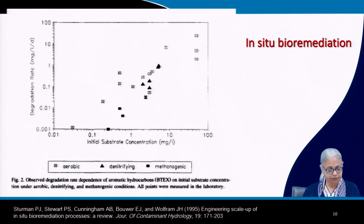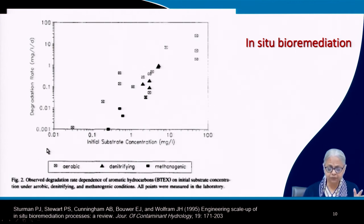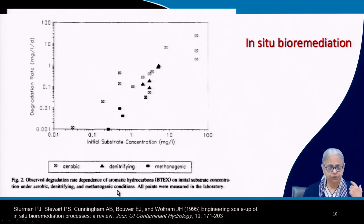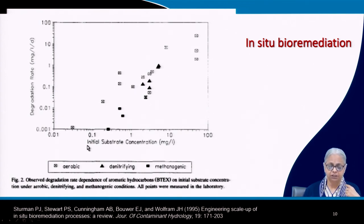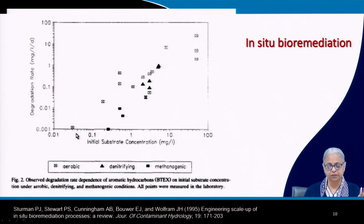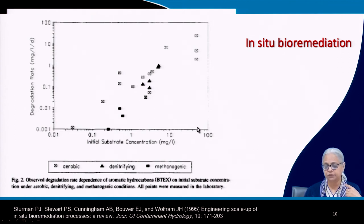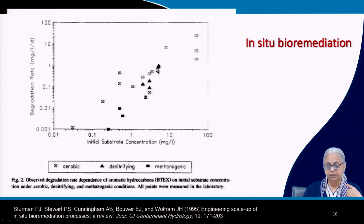Here is a graphic showing degradation rates of four aromatic hydrocarbons — benzene, toluene, ethylbenzene and xylene (BTEX) — which are common in petrol, under aerobic conditions, denitrifying conditions and methanogenic conditions. Under aerobic conditions, microbes can degrade these compounds over a wide range of substrate concentrations. Under denitrifying and methanogenic conditions, there is a smaller window but degradation remains possible.